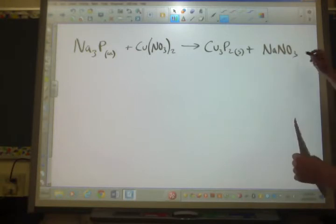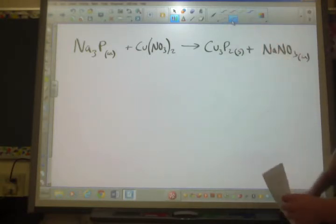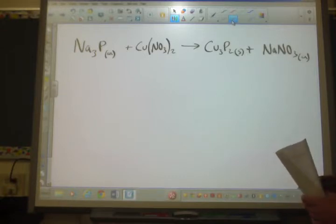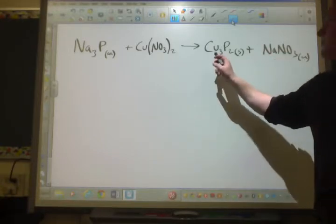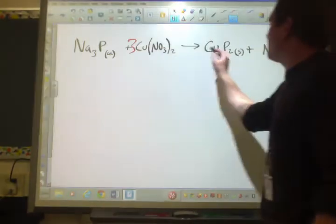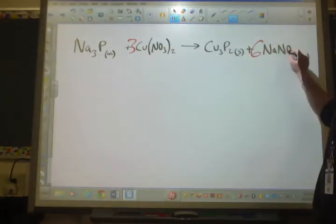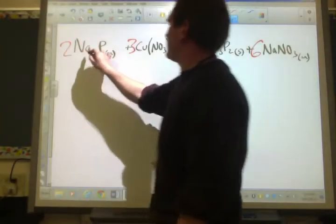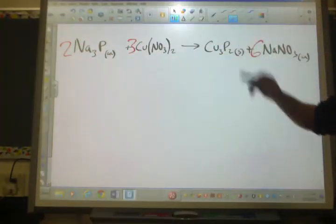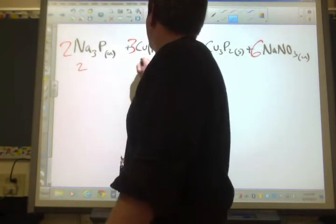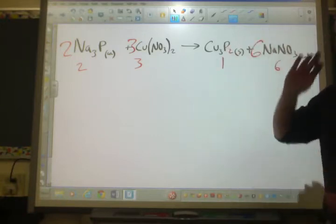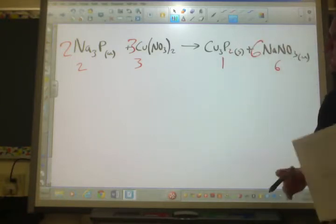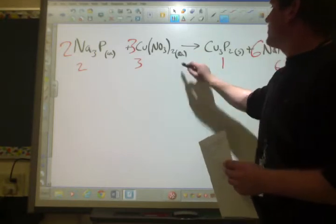Sodium phosphide is Na3P(aq) plus copper(II) nitrate Cu(NO3)2(aq) yields copper(II) phosphide Cu3P2 plus sodium nitrate NaNO3(aq). All right, so let's see. I'm going to start with my coppers. Three coppers, three coppers. This gives me six nitrates. Six nitrates gives me six sodiums. Six sodiums gives me two phosphoruses, two phosphoruses. So we're good. Two to three, one to six, okay? That's my balanced equation with state symbols.